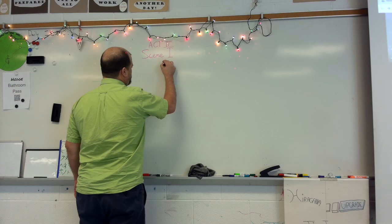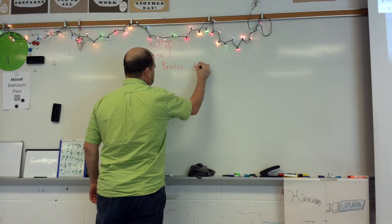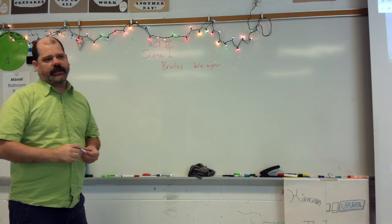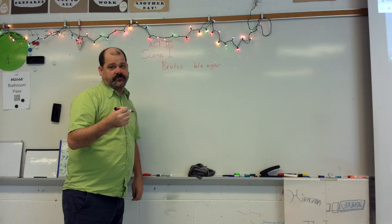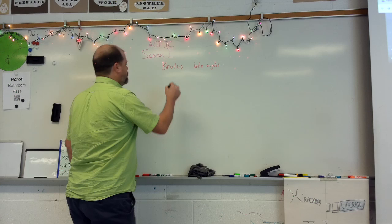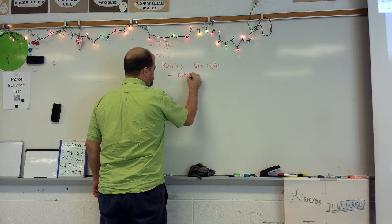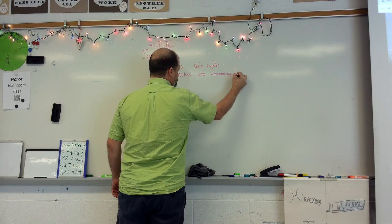Okay, so Act 2, Scene 1, you've got, we're at Brutus's house. It's late night. He tells his slave boy, Lucius, to come bring a candle, and to check the calendar to see if it's the Ides of March. And so Lucius does, and Brutus, he notices a couple things. He says that these notes are convincing him to join the conspiracy.